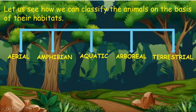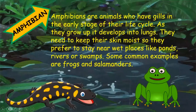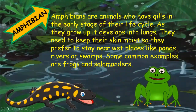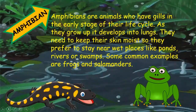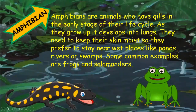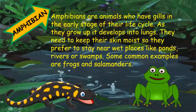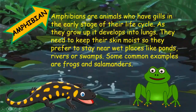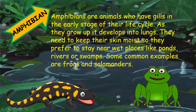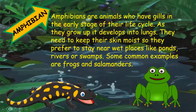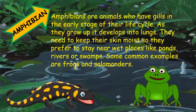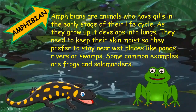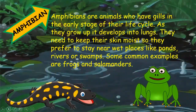Let us now have a look at each of these. Amphibians are animals who have gills in the early stage of their life cycle. As they grow up into adults, it develops into lungs. They need to keep their skin moist, so they prefer to stay near wet places like ponds, rivers, or swamps. Some common examples are frogs and salamanders.